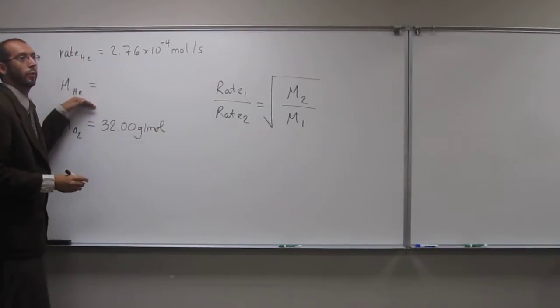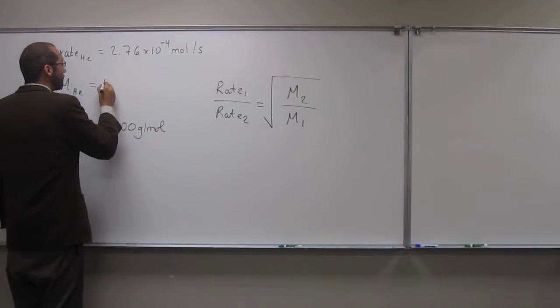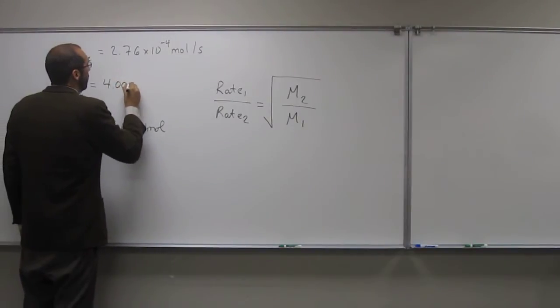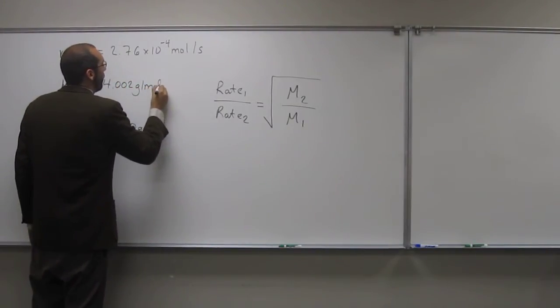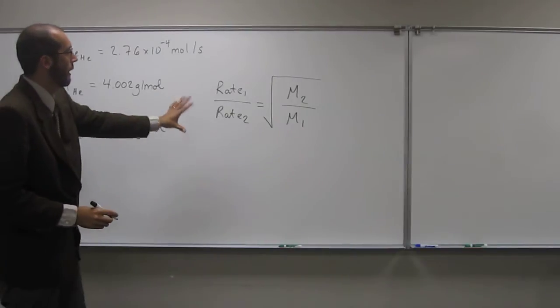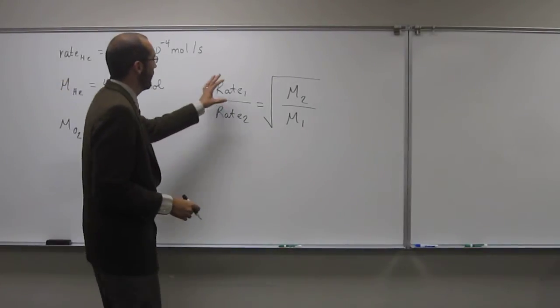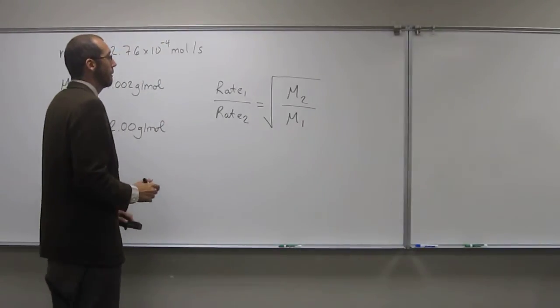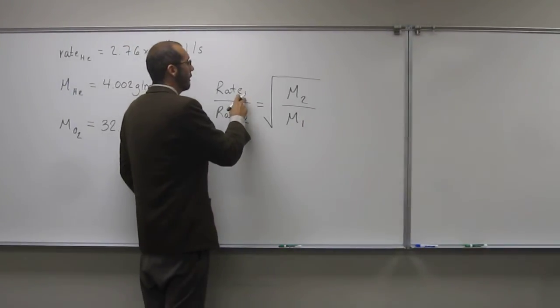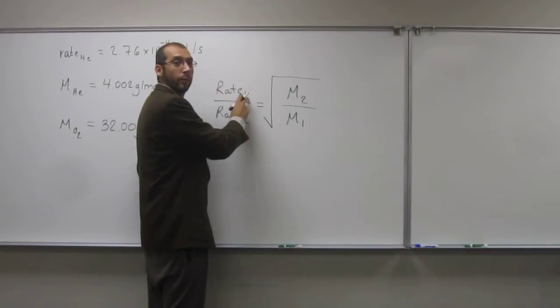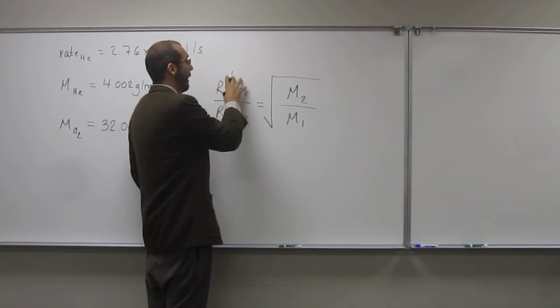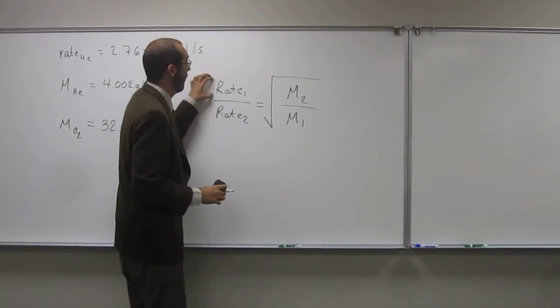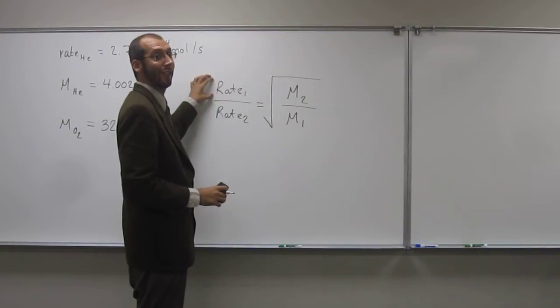And helium, of course, we look at the periodic table, 4.002 grams per mole. So, let's plug that into this equation. Well, it doesn't say helium and oxygen, so let's rewrite this equation to include those. So, we're looking for the rate of oxygen, so why don't we just put it here so we can have that variable be easily isolated.